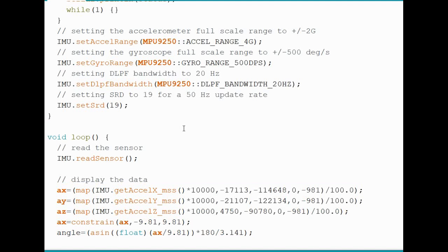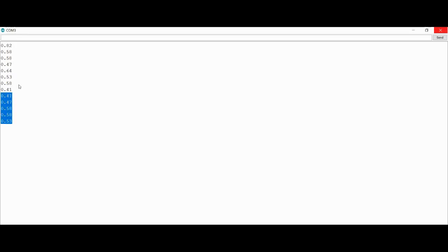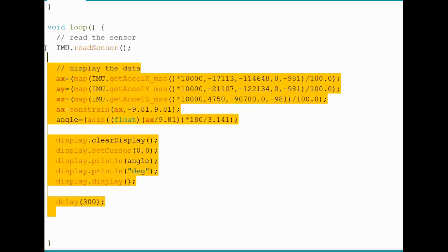In case you are wondering why such big values, then let me tell you that the map function only accepts integer as its input or arguments. So, any values near to 0 such as 0.5 will be rounded off to its previous integer. Once that was complete and after receiving the values from the serial monitor that seemed legit, I moved on to adding the code for the display.